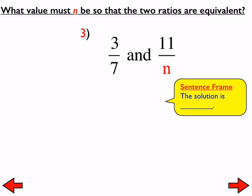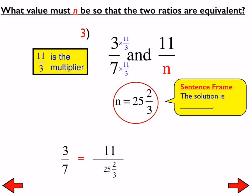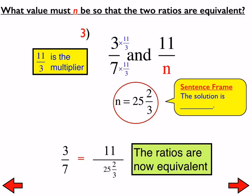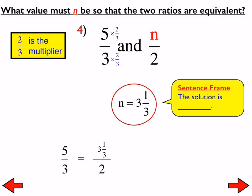Number 3: we have to multiply 3 by 11 thirds to make 11, so 11 thirds is the multiplier. N is 25 and 2 thirds, and so now we have created a proportion. Number 4: the multiplier is 2 thirds to turn 3 into 2, and that gives us 3 and 1 third, or 10 thirds, for N. Now we have created a proportion.